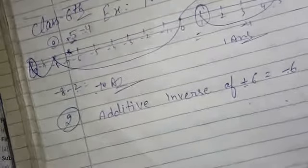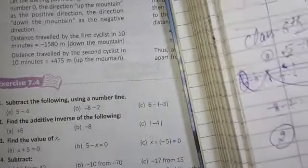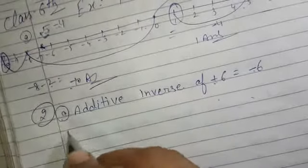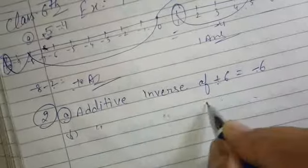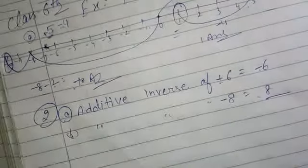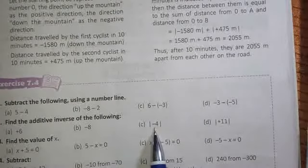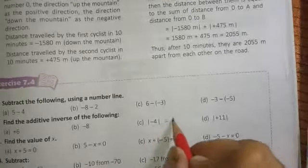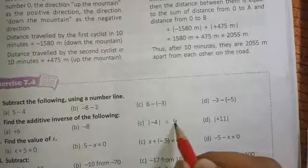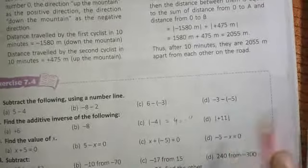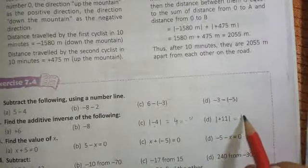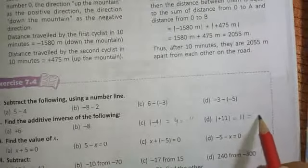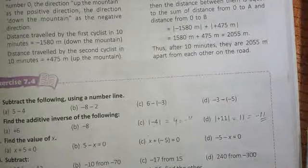और अगर इधर कोई minus की value है, तो उधर जाके plus में हो जाएगी. A part में value दी 6, B में दी minus 8 — इसकी additive inverse होगी plus 8. C part में |minus 4| दे रखा है — mode से बाहर आने के बाद value positive हो जाती है, और उसका additive inverse minus 4 हो जाएगा. इसी तरह से 11 का additive inverse minus 11 हो जाएगा.